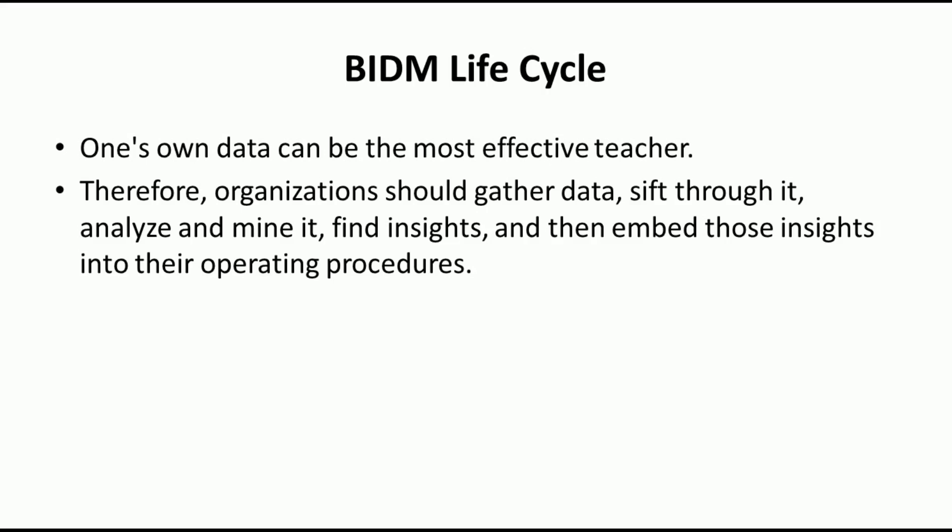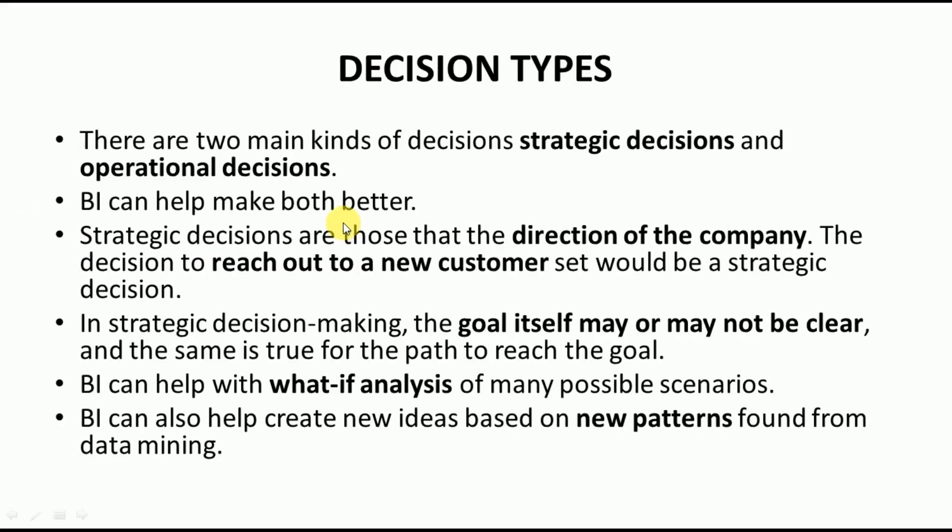There are two types of decisions we can take with the help of Business Intelligence tools: strategic decisions and operational decisions. A strategic decision is about the long-term goal — such as what direction should the company take after five or ten years, or what level do you want to reach after five years. That is a strategic decision: a decision that will bring the company to a certain level after a certain number of years.